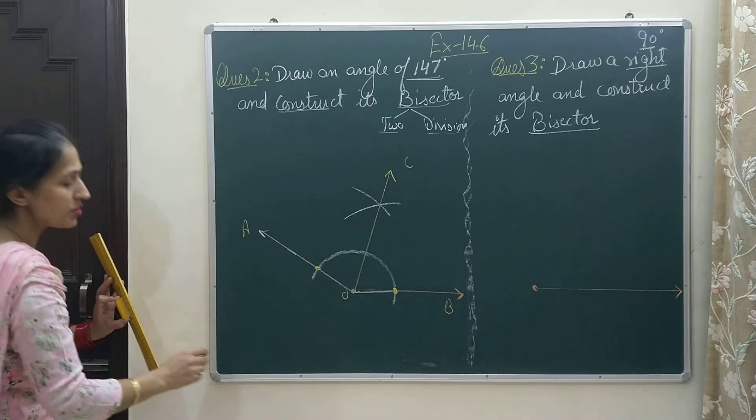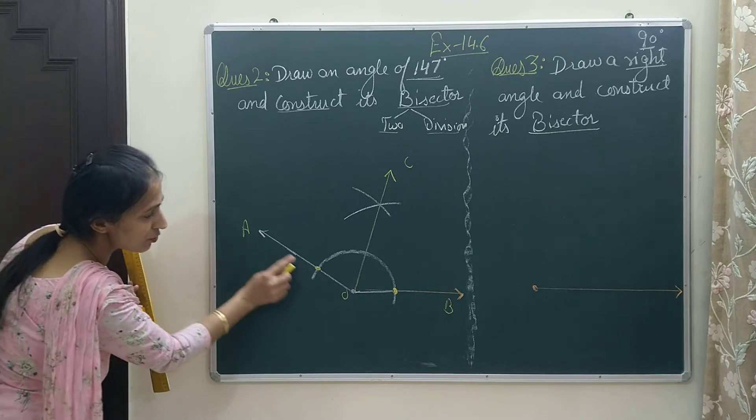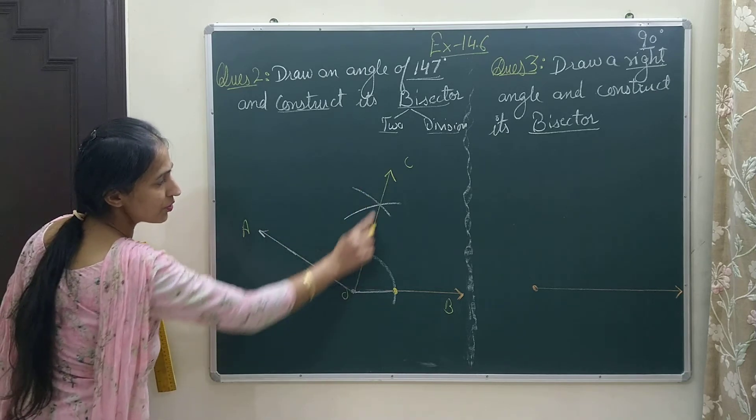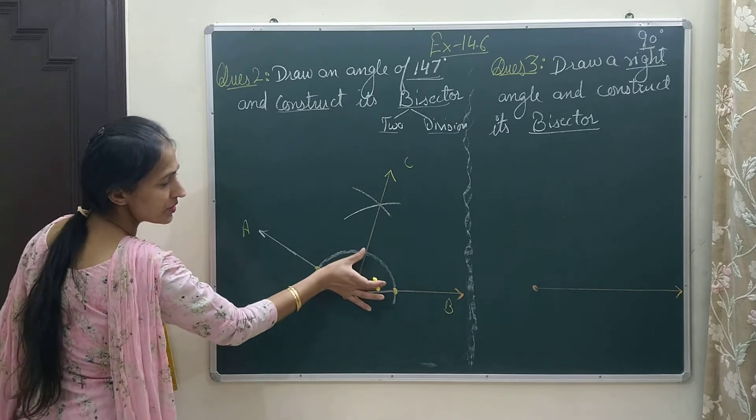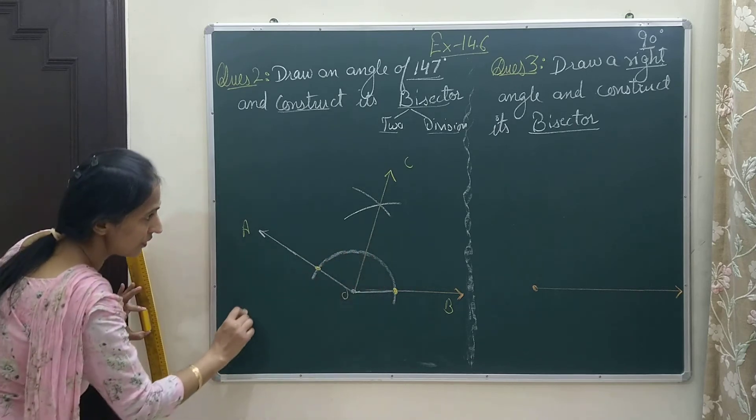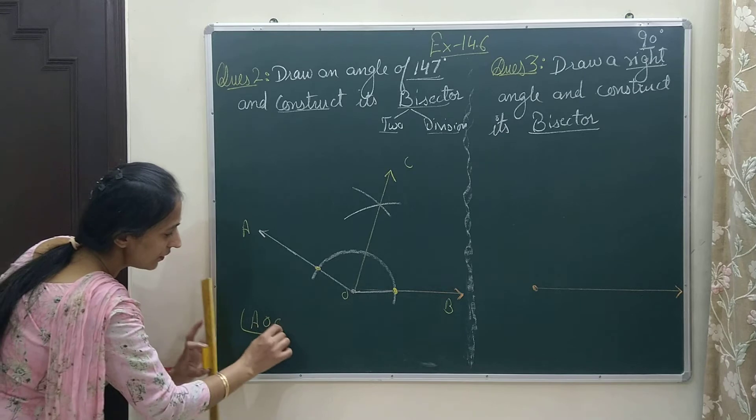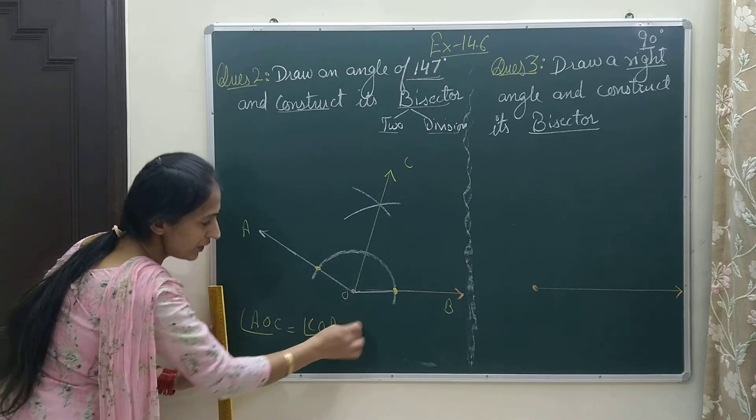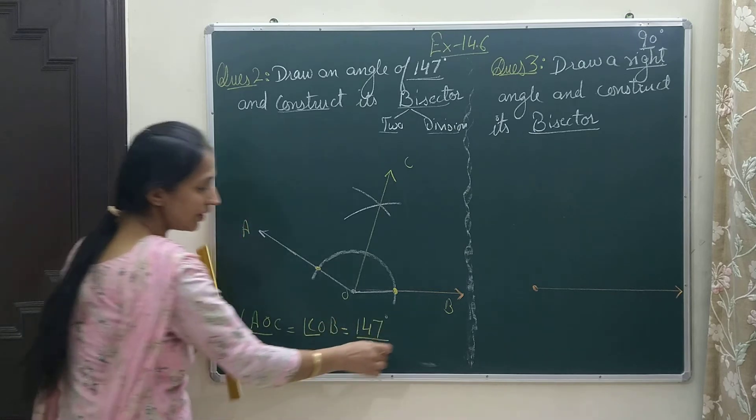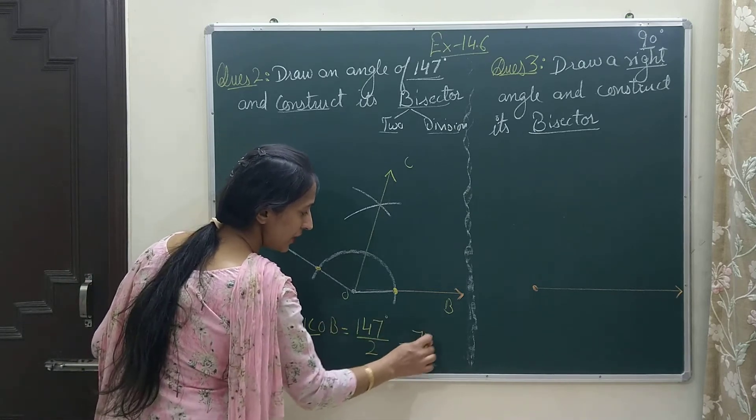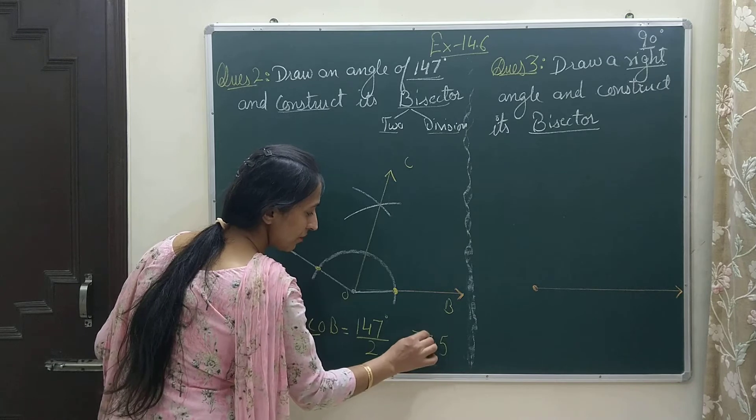I can mark here A, O, B, C. I can write any name as the name is not mentioned. These two angles will be equal now. Angle AOC, this smaller angle, will be equal to another smaller angle COB. These are half of 147 degrees, and half is 73.5.